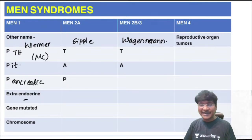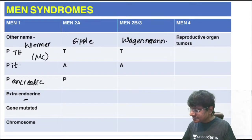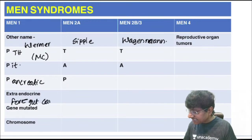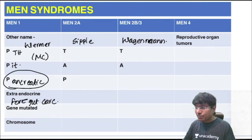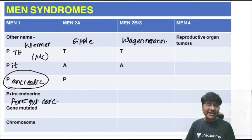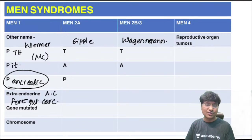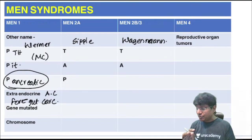Extra endocrine manifestations in MEN-1 are foregut carcinoids, angiofibromas, and collagenomas. Most common pancreatic tumor is P-poma (polypeptidoma). MEN-2A mnemonic is TAP: T = thyroid (medullary carcinoma), A = adrenal pheochromocytoma, P = parathyroid tumor. Extra endocrine manifestation in MEN-2A is amyloidosis. Gene mutated: RET proto-oncogene on chromosome 10.